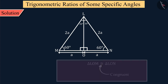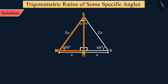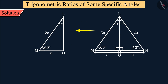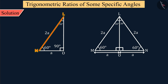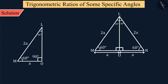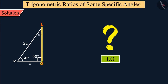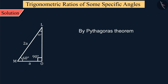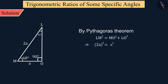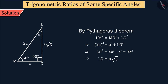Let's discuss one of these two triangles — triangle LOM. In triangle LOM, we see that angle O is a right angle, angle L is 30 degrees, and angle M is 60 degrees, where the measure of side OM is a and the measure of side LM is 2a. Using the Pythagoras theorem in triangle LOM, the length of side LO — that is, the perpendicular — is equal to a times the square root of 3.